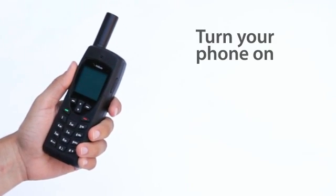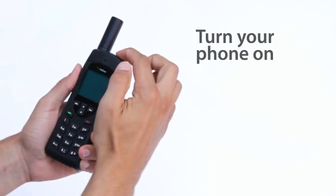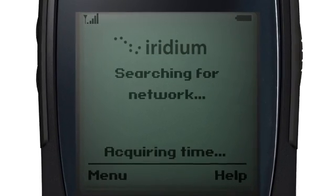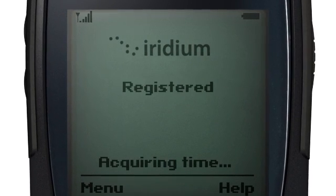Next, turn your phone on. Press and hold the black power button on top for 5 seconds, then wait a moment while it locates and registers with the network.